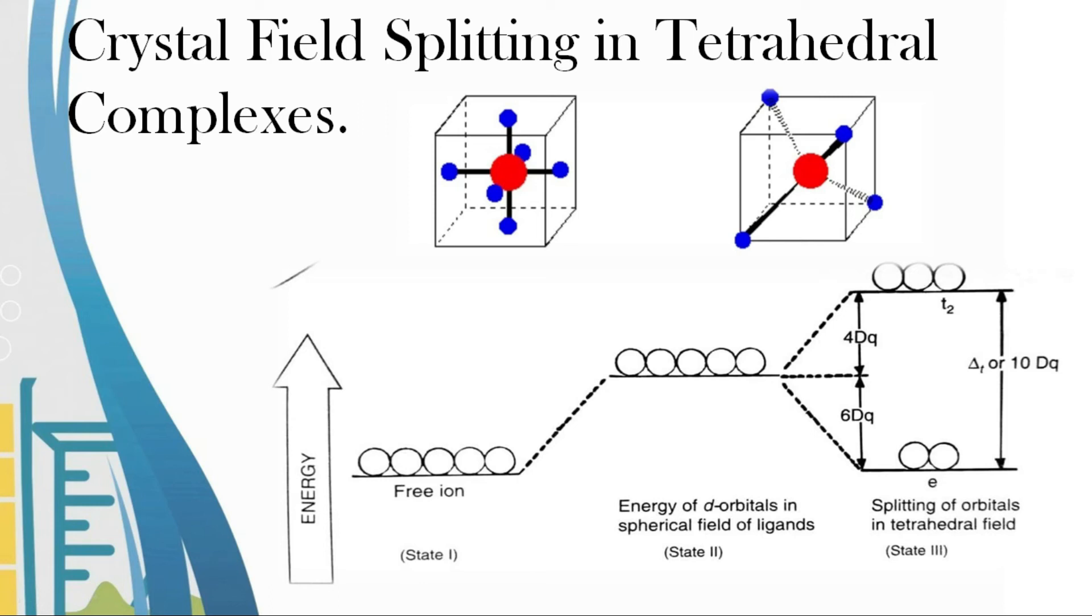The orbitals along the axes (dx²-y² and dz²) have lower energy, forming the e set. The energy difference in tetrahedral complexes is also called crystal field splitting energy, represented as Δt. Due to symmetrical arrangement, we have t2 and e sets of orbitals.